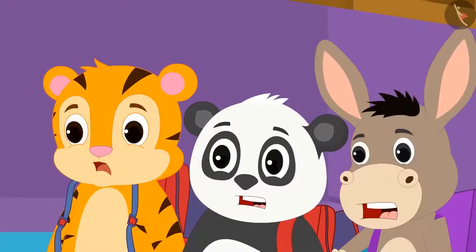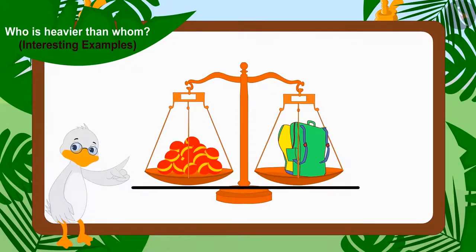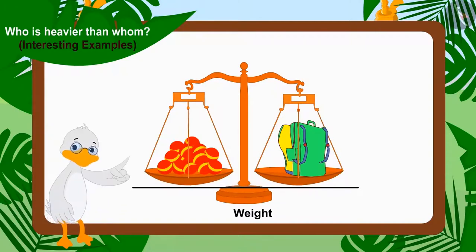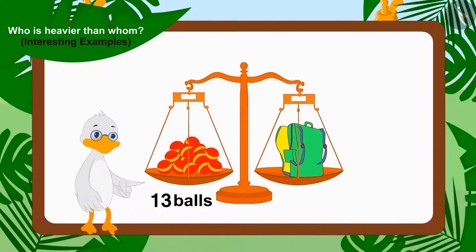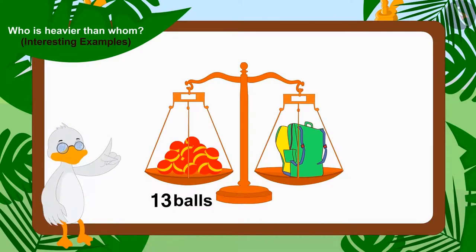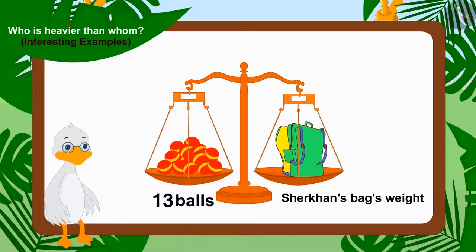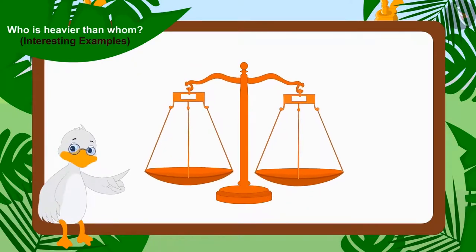Uncle kept placing balls on the scales until both sides came to the same position. The children could not understand at first. Uncle then explained that when the two plates of the scales are on the same level, it means the weight of the objects in both plates is the same. When Uncle counted the balls, he found there were thirteen balls in the plate, meaning the weight of thirteen balls equals Sher Khan's bag's weight.